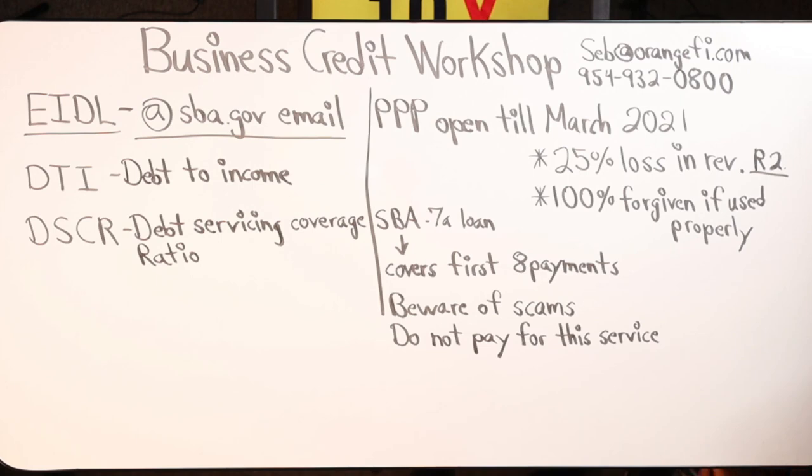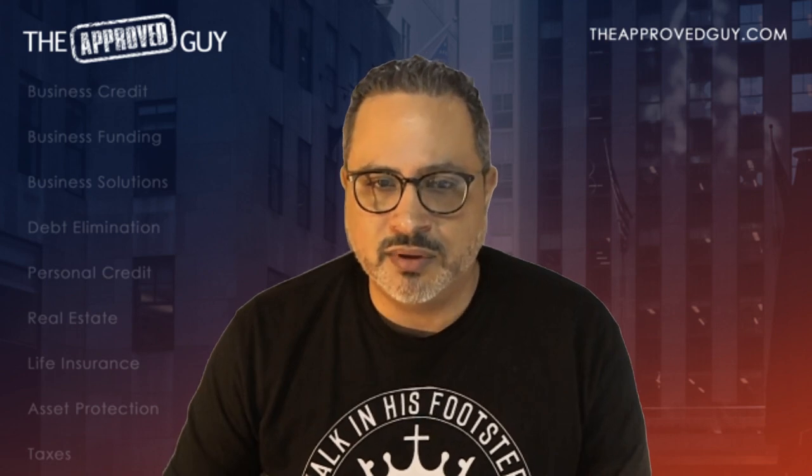DTI is a personal finance measure that compares the amount of debt you have to your overall income. Lenders, including mortgage issuers, use it to measure your ability to manage monthly payments and repay borrowed money. A low debt to income ratio demonstrates a good balance. The lower the percentage, the better your chance of getting the loan or line of credit you want. A higher DTI signals you may have too much debt for your income, and lenders will view this as a sign you cannot service the debt.